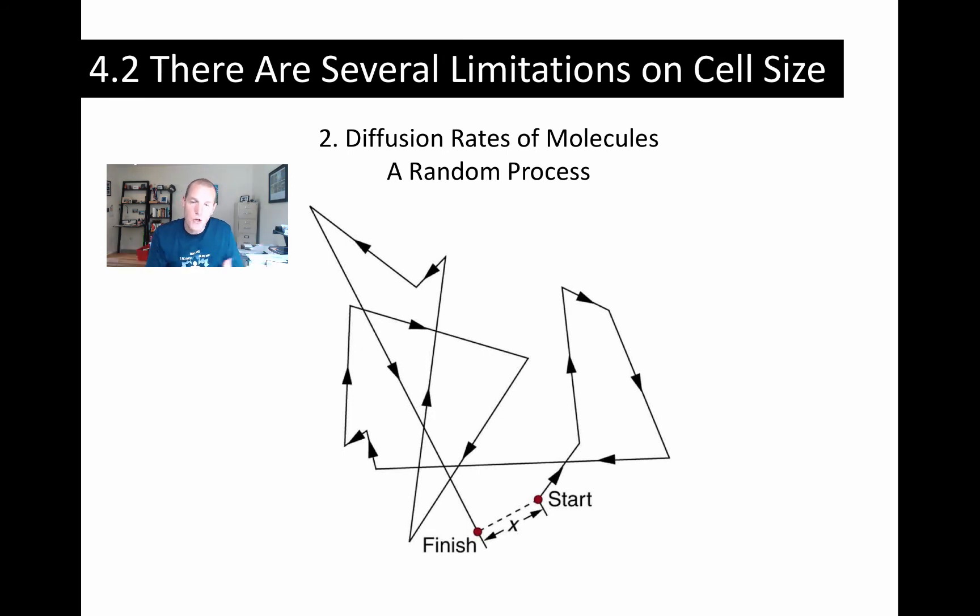So there are ways to overcome this. There are adaptations in cells to increase the effect of diffusion rate. But by and large, you can't get too big because you can't move things around fast enough just relying on diffusion.